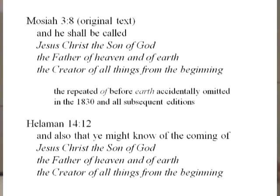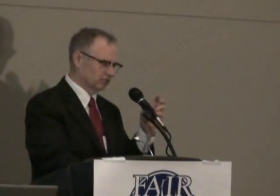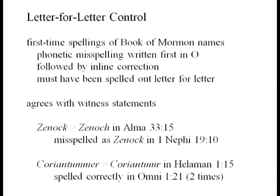Finally, there is letter-for-letter control. People witnessing the translation said that Joseph Smith, when the scribe needed it, would spell out the difficult Book of Mormon names. We find clear evidence of this in the original manuscript. I particularly like the last example: Coriantumr. I've written about these names showing that Joseph Smith had to have spelled them out.